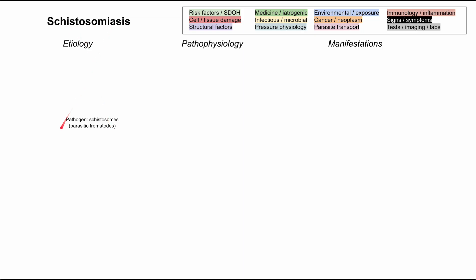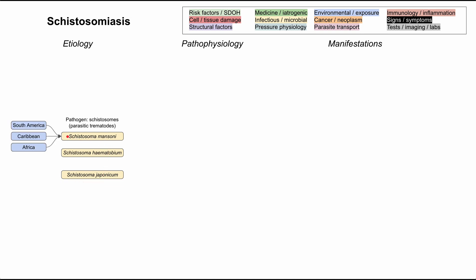Schistosomiasis is caused by a pathogen called schistosomes, and this is a parasitic trematode. There are three types worth knowing: schistosoma mansoni, schistosoma hematobium, and schistosoma japonicum. Mansoni comes from South America, the Caribbean, and Africa. Hematobium comes from Africa and the Middle East, and japonicum — sounding like Japan — comes from Southeast Asia and China.